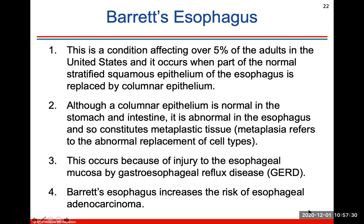Barrett's esophagus affects about 5% of people. It occurs when part of the normal epithelium is replaced by columnar epithelium, which is normal in your stomach and intestine but abnormal in the esophagus. This constitutes metaplastic tissue — metaplasia refers to the abnormal replacement of cell types. It usually occurs due to injury of the esophageal mucosa by GERD, which is a reflux disease, and it also increases the risk of esophageal adenocarcinoma, which is cancer of the esophagus.